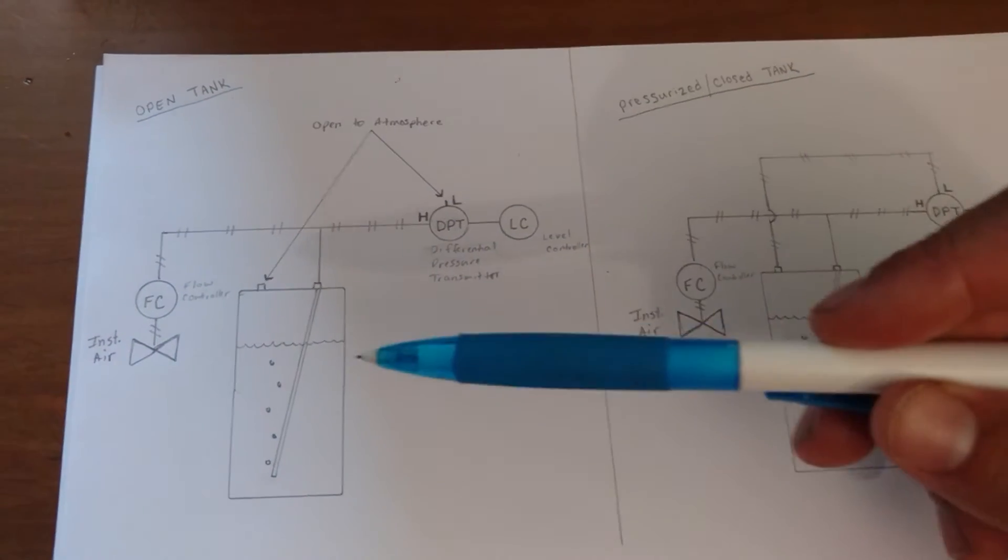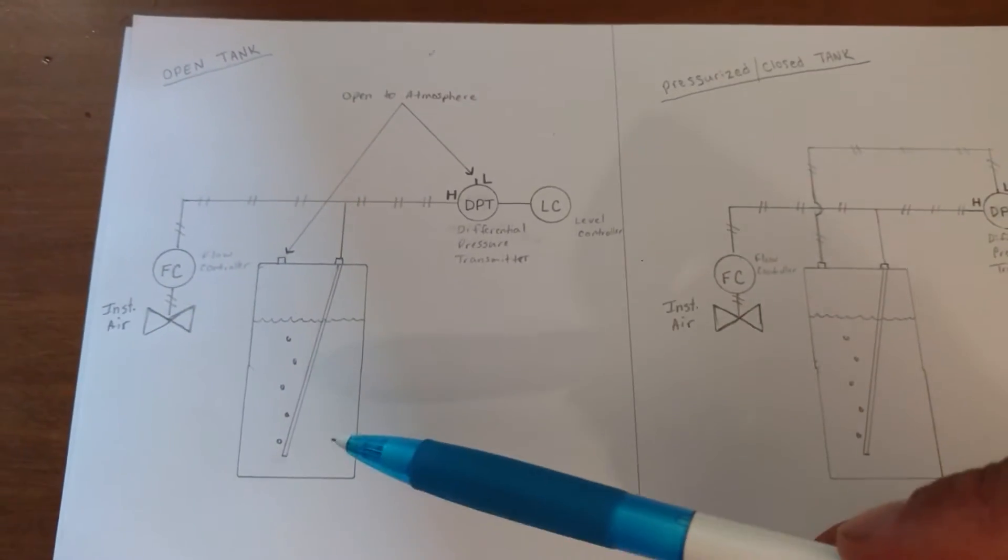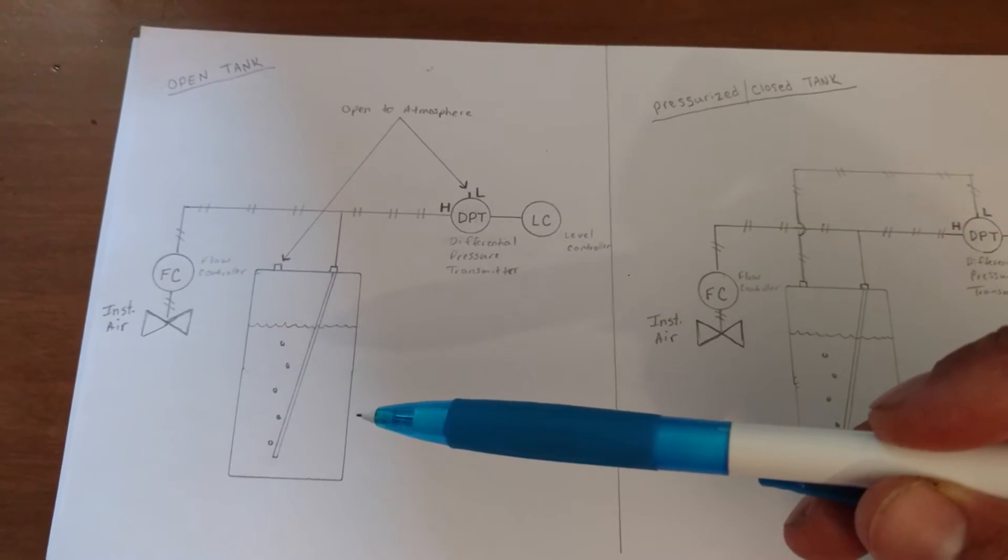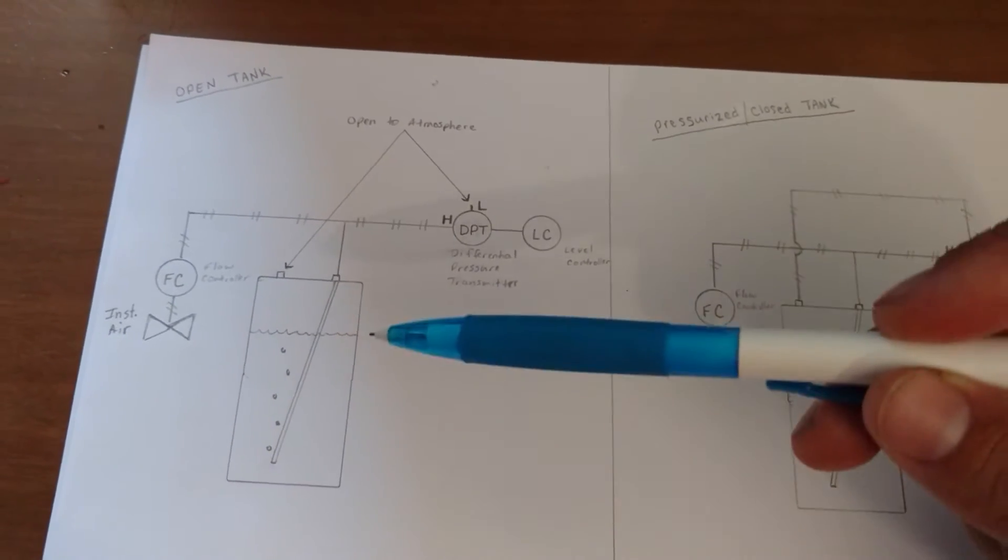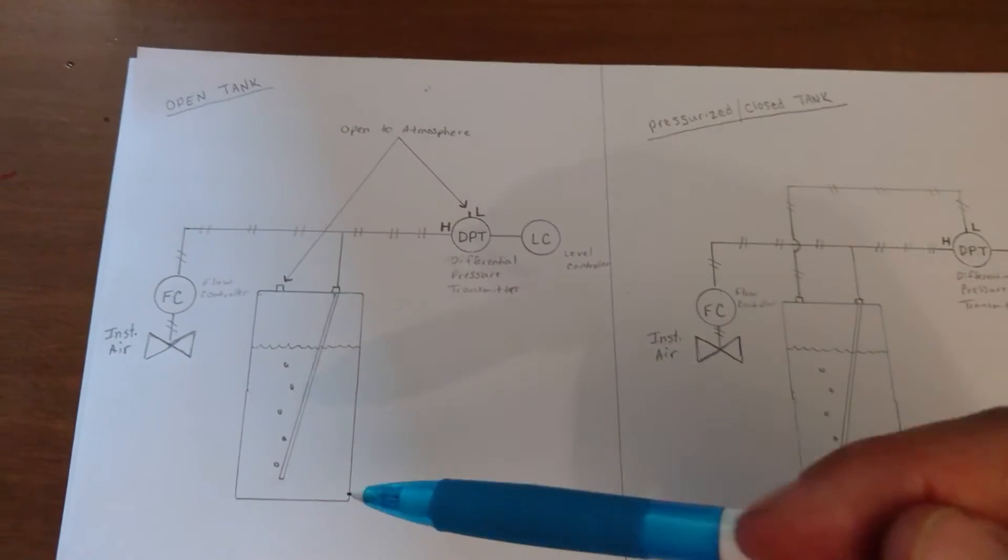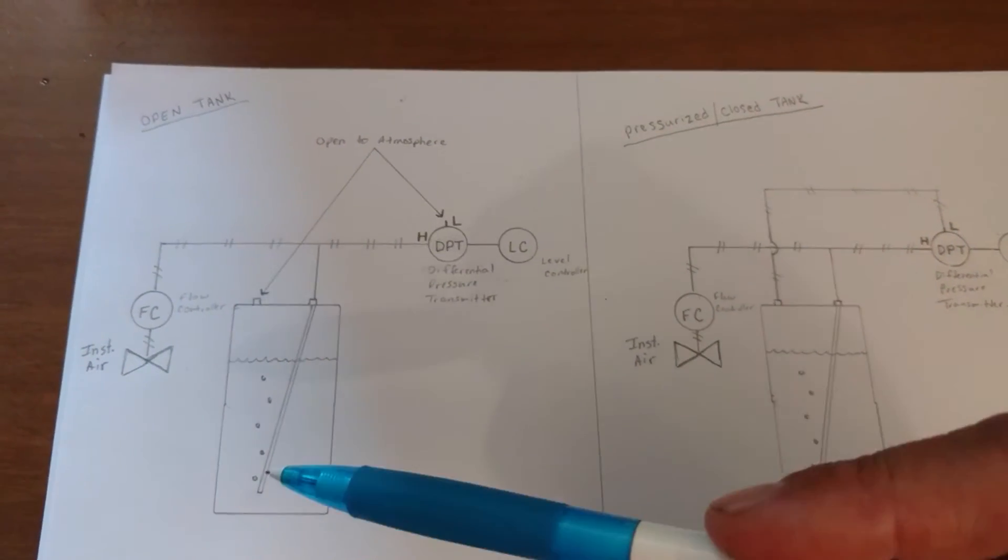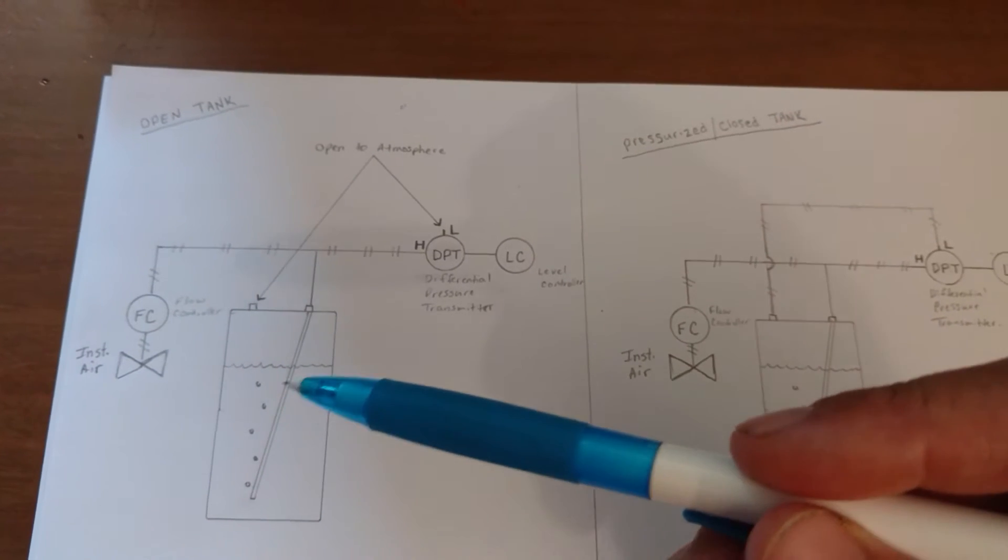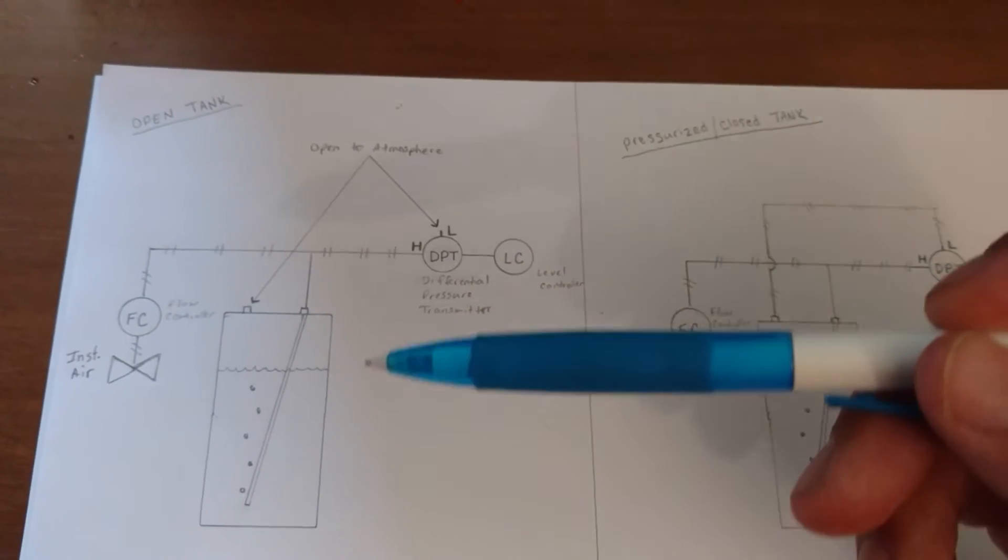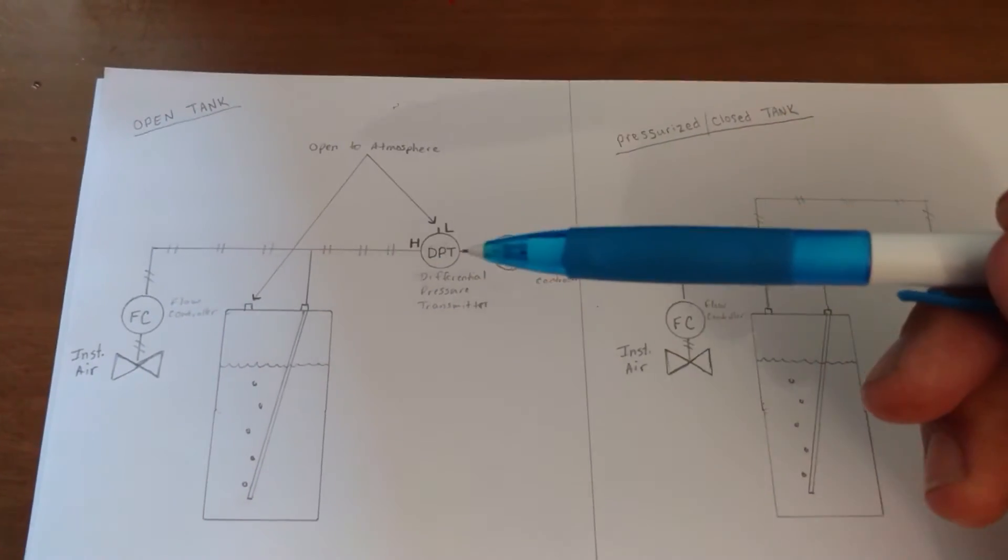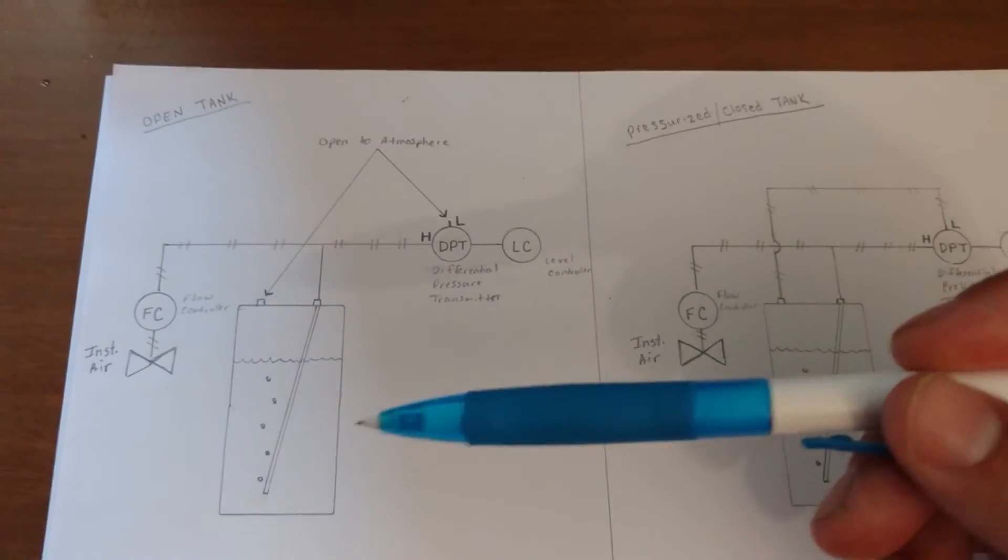What's happening here is as the level of your container is filled with water or increases in depth, the pressure that's going to be needed in order to force these bubbles or force air out of this tube is going to increase. And based on this increase in pressure, we can find the level of our tank.